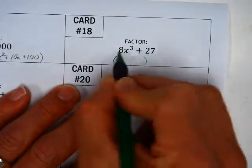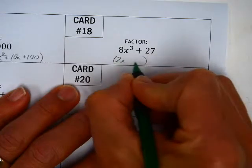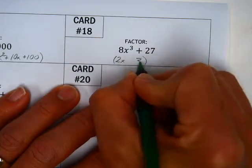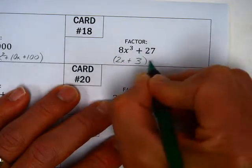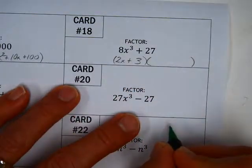Cube root of both of those. Cube root of this? 2x. Cube root of that? 3. That's a plus, this is a plus. This is a binomial, it's a trinomial.